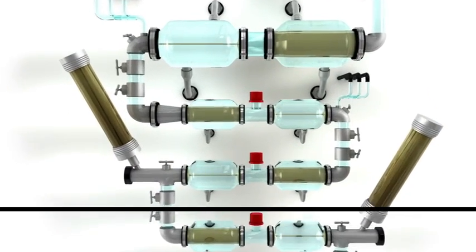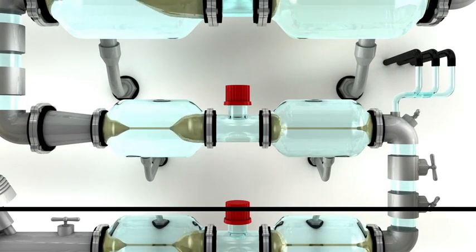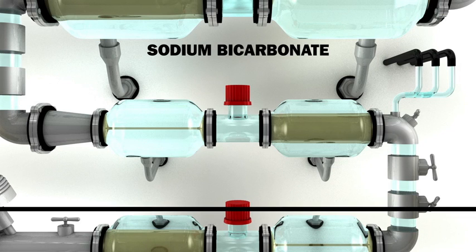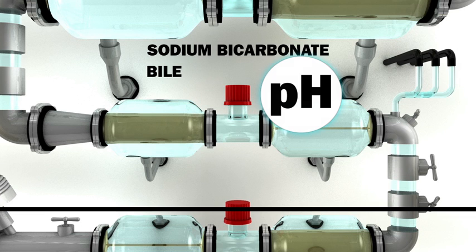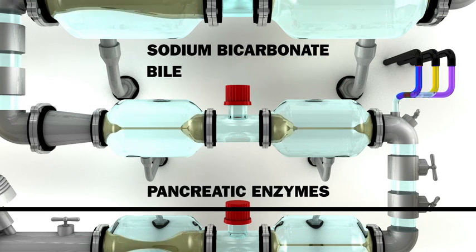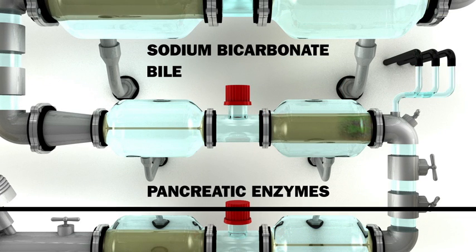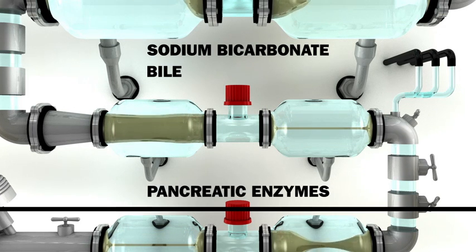In the first part of the small intestine, the duodenum, bicarbonate is secreted to neutralize the pH value. Bile is secreted to emulsify fat. Pancreatic enzymes are secreted that digest fat, carbohydrates and proteins.